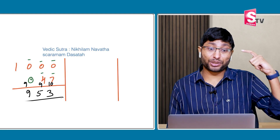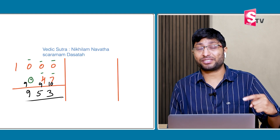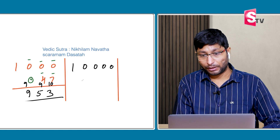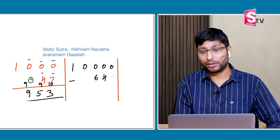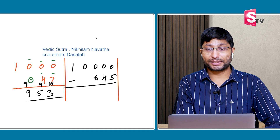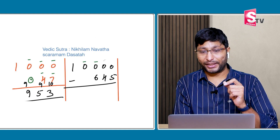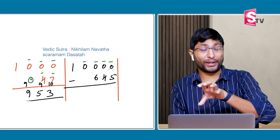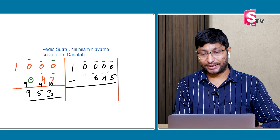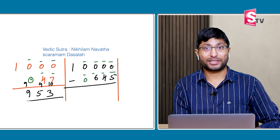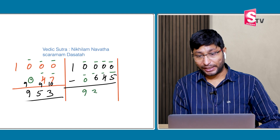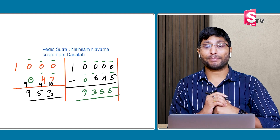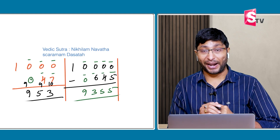By imagining the numbers, it will improve children's imagination skills. For 10,000 minus 645: we have four zeros, so we need four digits. Imagine 0645. All from 9, last from 10: 9 minus 0 is 9, 9 minus 6 is 3, 9 minus 4 is 5, 10 minus 5 is 5. Answer: 9355. Similarly, 1000 minus 2 — everybody knows the answer is 998, but let's understand the concept. Imagining 002: 9 minus 0 is 9, 9 minus 0 is 9, 10 minus 2 is 8. Answer: 998.